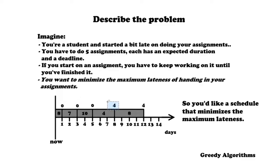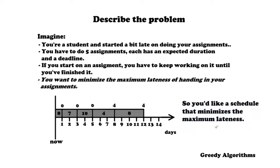For another assignment the deadline is day four, but you hand it in on day eight, so the lateness will be four — the difference between the two is four days. So you want a schedule that minimizes the maximum lateness, and the maximum lateness in this schedule is four, as that's the maximum value of being late for an assignment.